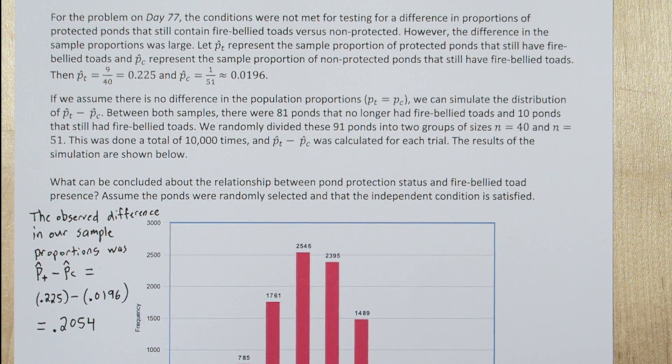However, there were some condition violations and we weren't able to conduct a significance test back on problem 77. So we're going to take a different approach. If you read the stem of the problem, they took the 91 ponds and they randomly divided them into two groups to simulate what we had in our samples, a group of 40 and a group of 51 ponds.